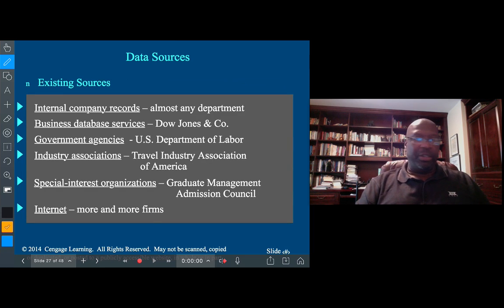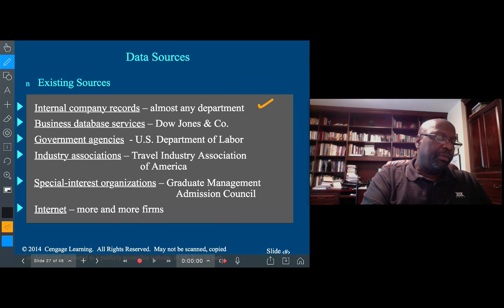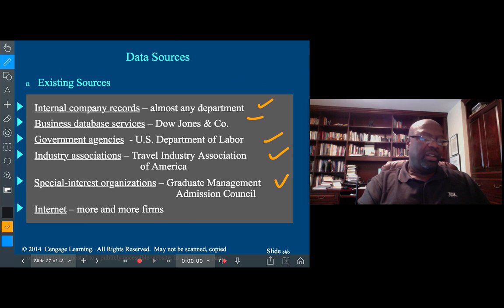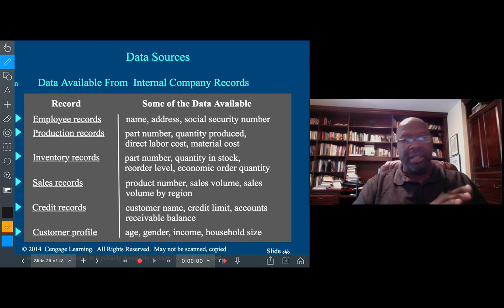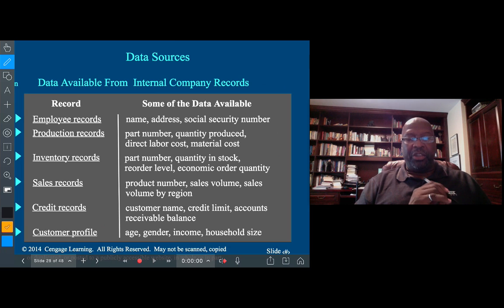So we could look at trends and patterns in data when we look at time series data. Where do we collect our data from? There's lots of different sources, sometimes from internal documents, business databases, government agencies like Stats Canada, industry associations, special interest organizations, the internet. Data can be primary or secondary. Primary is when you collect the data yourself, secondary is when that data is published and you take advantage of it.